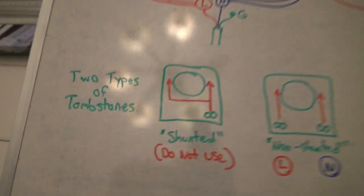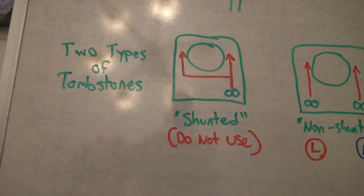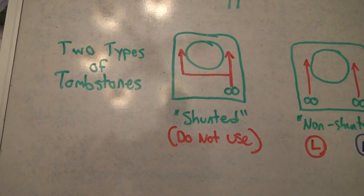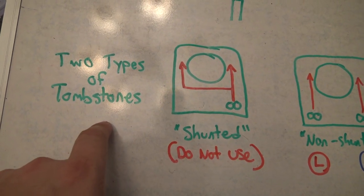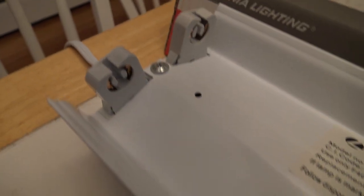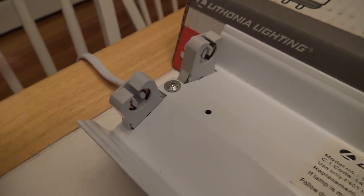All right, so one more thing we need to talk about real quick before we get into this project is the two types of tombstones. So the tombstones are what connects your bulbs at both ends. This is what it looks like right there. That's a tombstone.